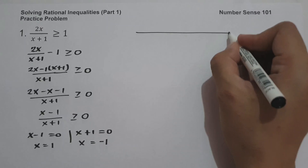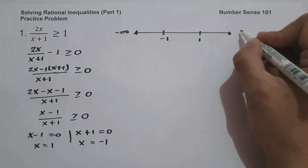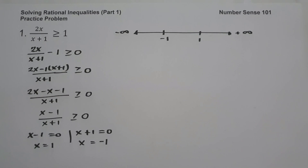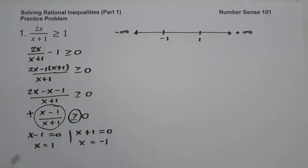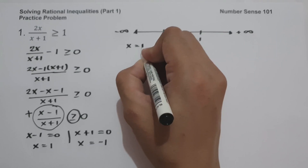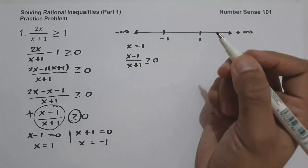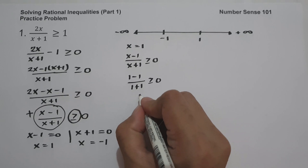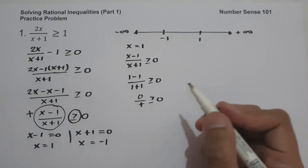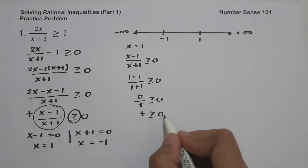Let us draw a number line to check whether negative 1 and positive 1 are included in our solution. On the left is negative infinity, on the right is positive infinity. Since the inequality symbol is greater than or equal to, the value of the expression must be positive, because all positive numbers are greater than or equal to 0. Let's test x equals 1: we have 1 minus 1 over 1 plus 1, which is 0 over positive, equal to 0.